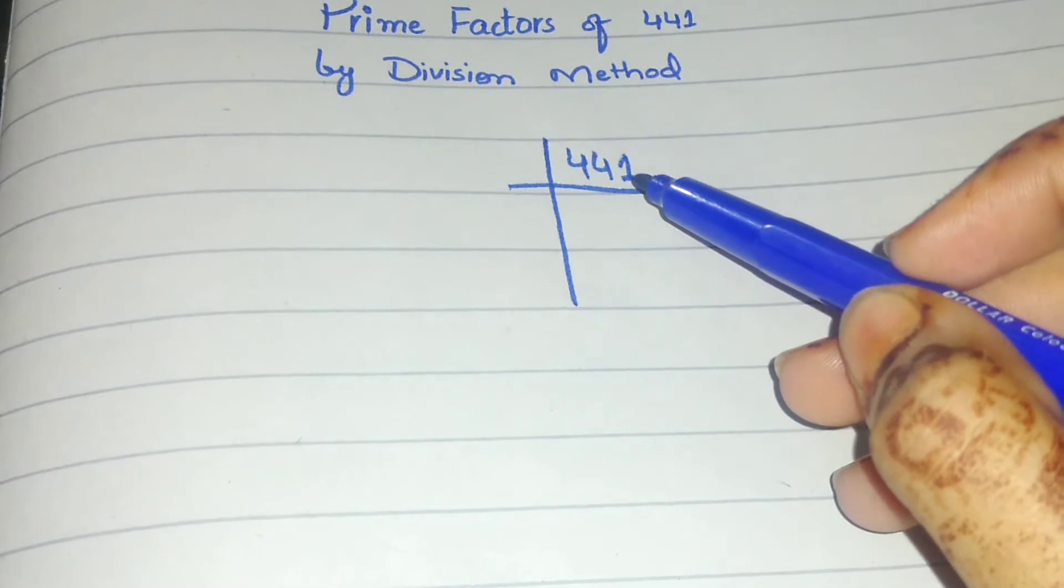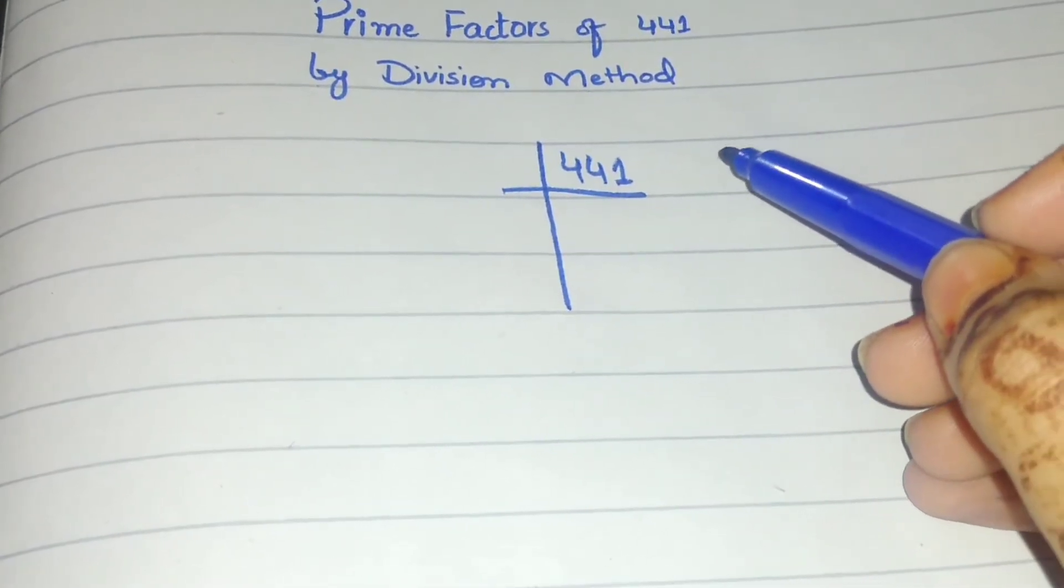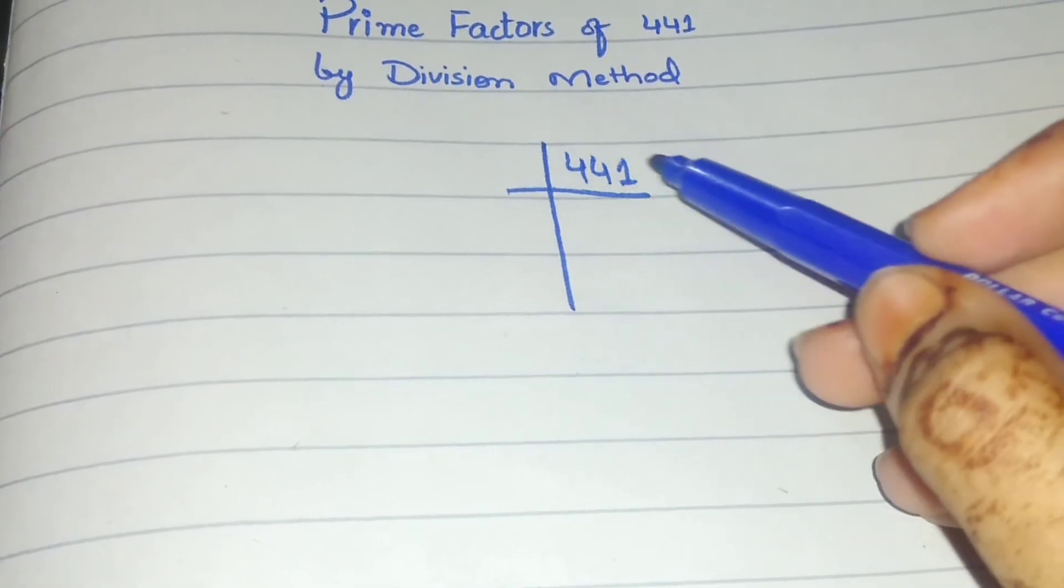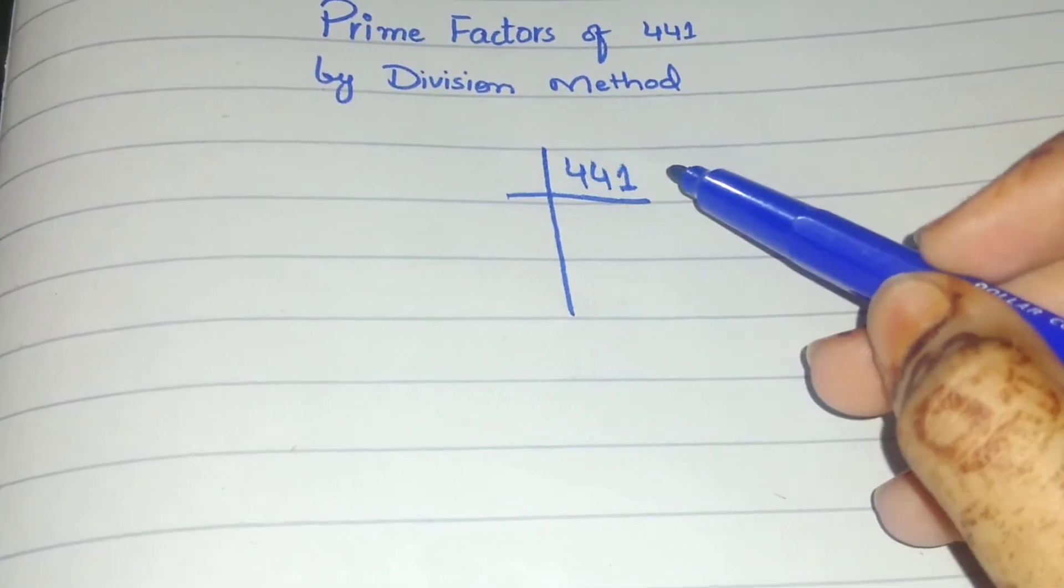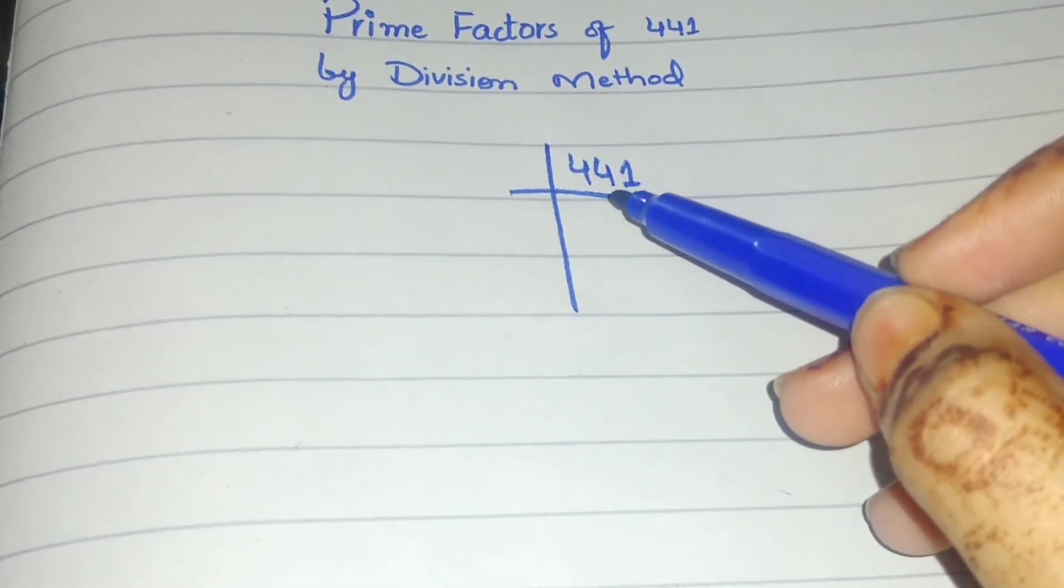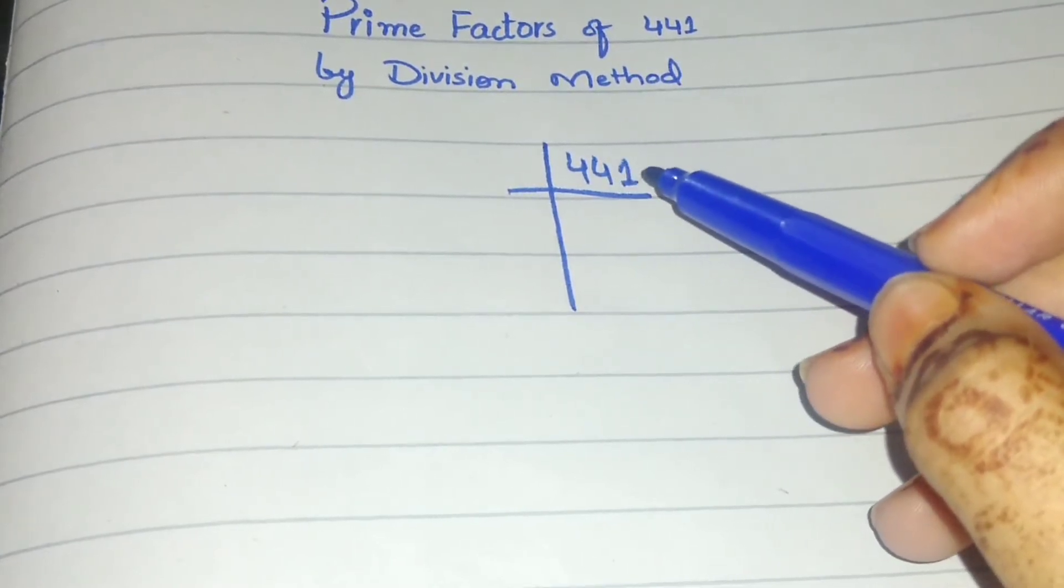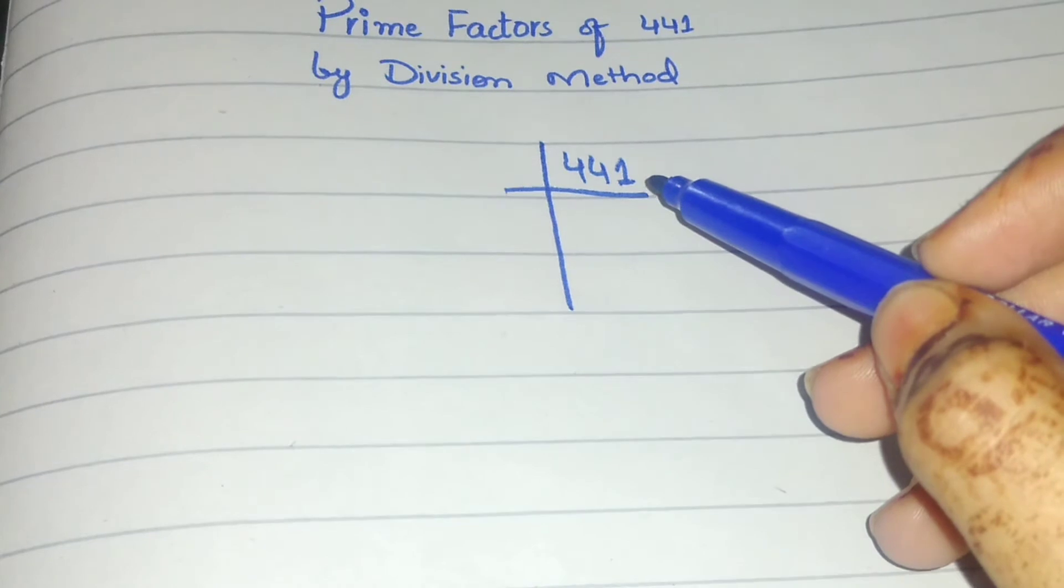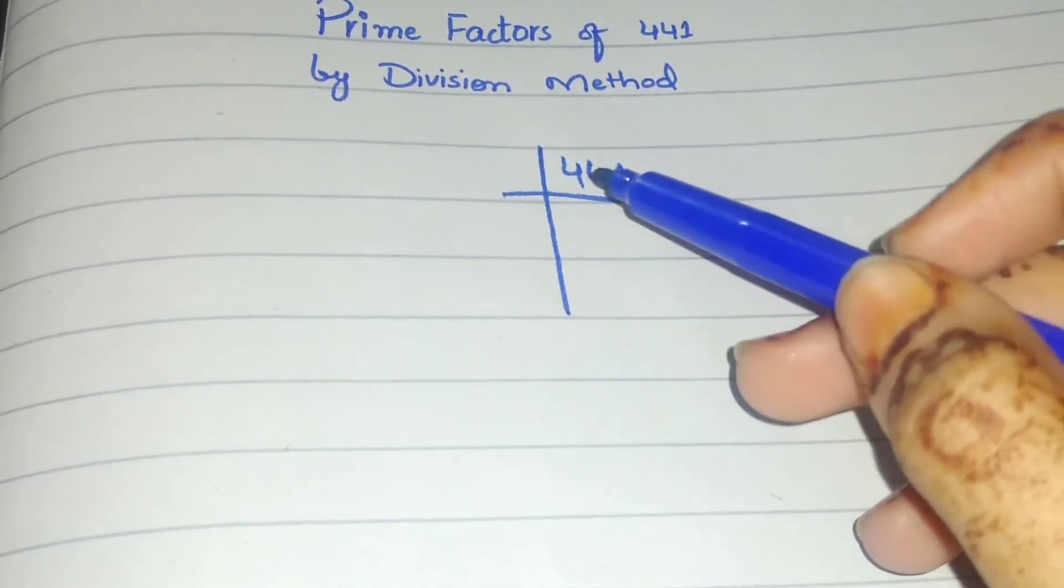The next prime number is three. For the divisibility rule of 3, if we add the digits: 4 plus 4 is 8, 8 plus 1 is 9. If the sum is divisible by 3, then the number can be easily divided by 3. So let's start with 3.